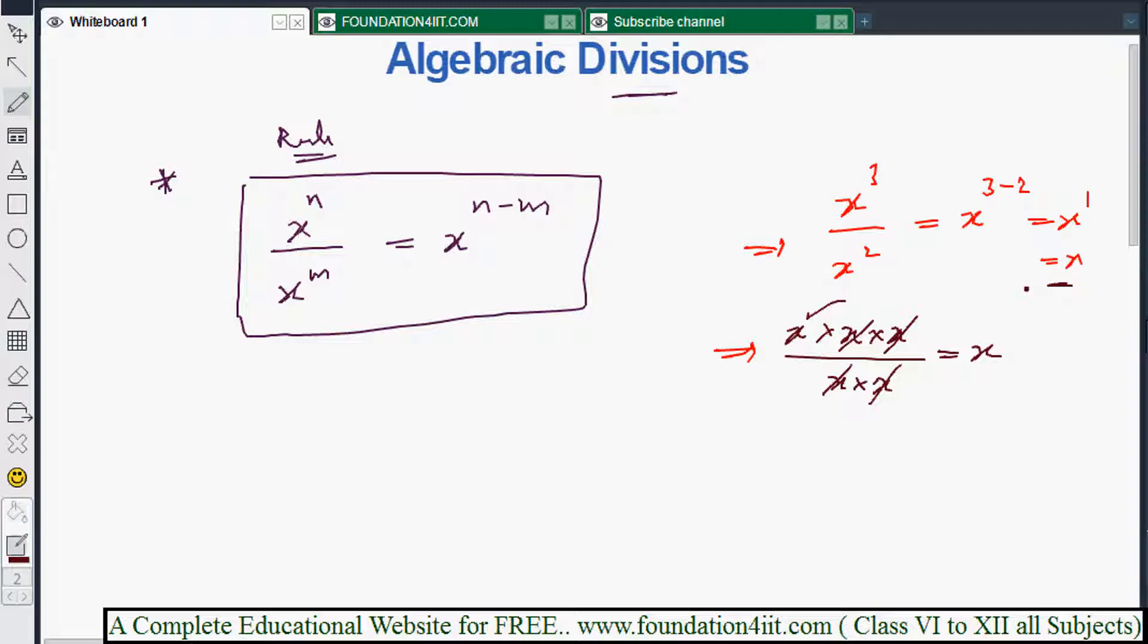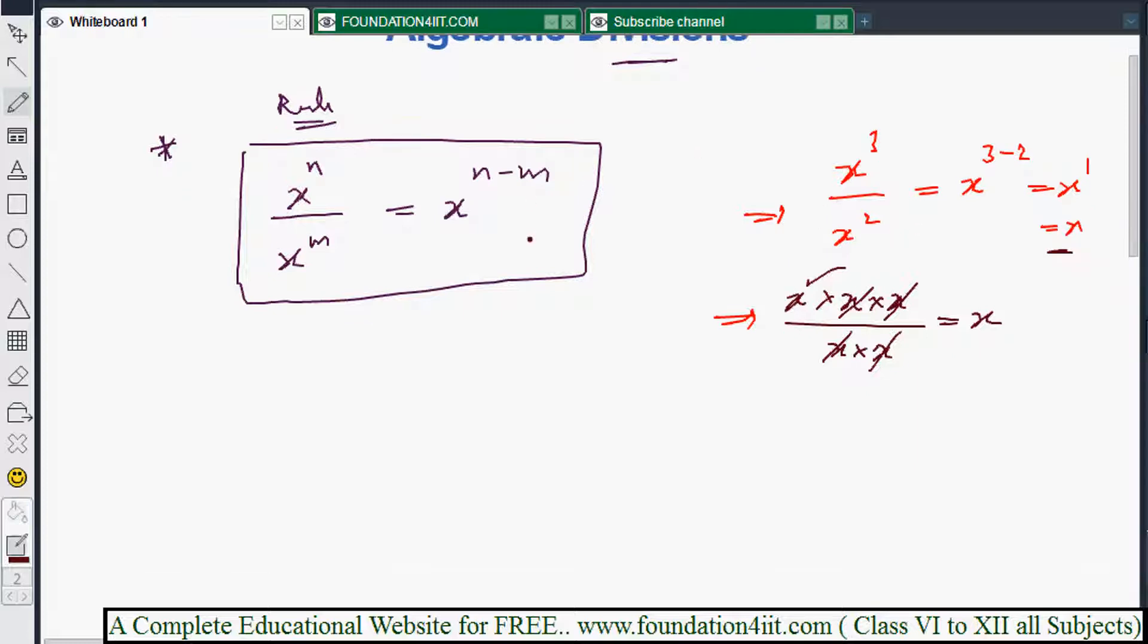We need to apply the formula instead of writing each and everything. Now similarly, see for example when big numbers are there: x to the power 15 by x to the power 7. You can't write 15 times x and 7 times and do cancellation. So x to the power 15, numerator power minus denominator power, because the bases are same, x to the power 15 minus 7 is 8.